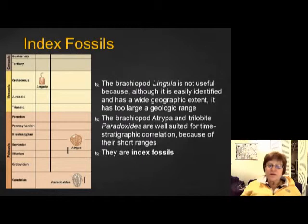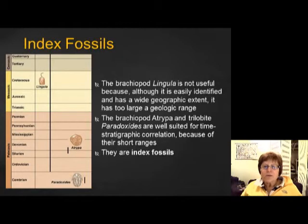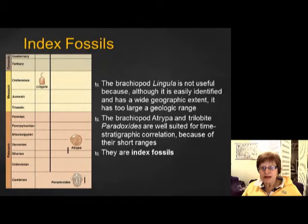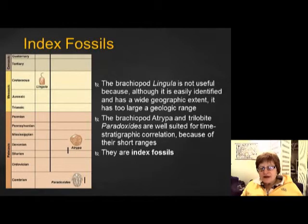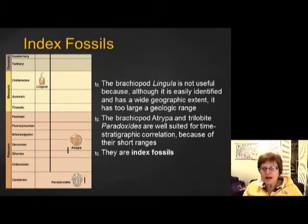Looking at these three examples — a trilobite, one brachiopod, and another brachiopod — which counts as an index fossil? The black lines show how long each lived, their lifespan. The trilobite and one brachiopod have very short lifespans, whereas Lingula has an extremely long time span. Lingula would not be a good index fossil because it lived too long without change. The trilobite and the short-lived brachiopod are good index fossils because they represent just a small part of geologic time.